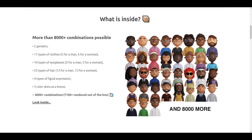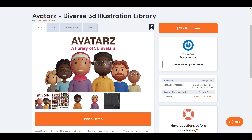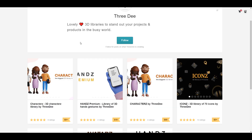They have already made renders for 800-plus different combinations of things that you can get. These are not the only things they have to offer — you can find them on both Gumroad and also on Blender Market. Within their Gumroad there are free things you can get: the free hands pack, the characters free pack, and also the avatars free pack.